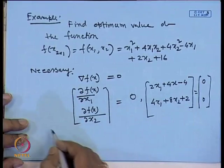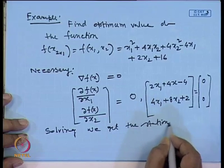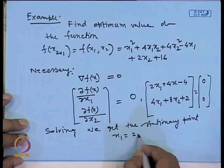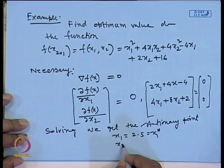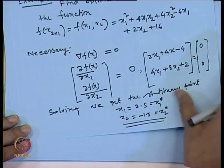Solving these two algebraic equations, we get the stationary point x1* = 2.5 and x2* = -1.5. Now we need to check whether the Hessian matrix at this point is positive definite, negative definite, positive semi-definite, or negative semi-definite. We must check the sufficient conditions.